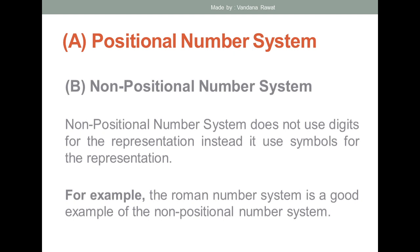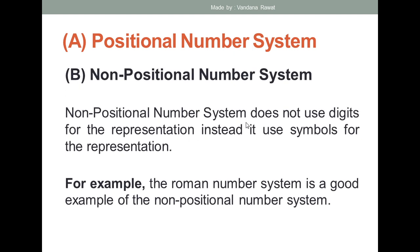After that, the non-positional number system. Non-positional number system does not use any kind of digits for representation — instead it uses symbols. The most common example of a non-positional number system is the Roman number system, because in the Roman number system we use symbols. This is an example of a non-positional number system. Till then you just learn from it, and after that I'll solve some questions related to this number system topic.